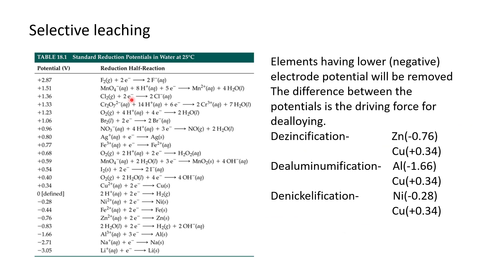In this table, we can see standard reduction potentials of different metals in water at 25 degrees Celsius. As we have already seen, selective leaching occurs in alloy systems where the electrode potential difference is high, and the elements having lower or negative electrode potential will be removed. The difference between the potentials is the driving force for the de-alloying process to take place.